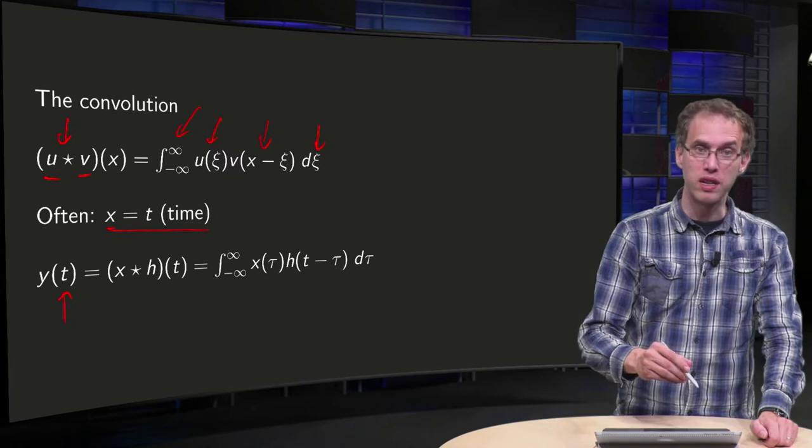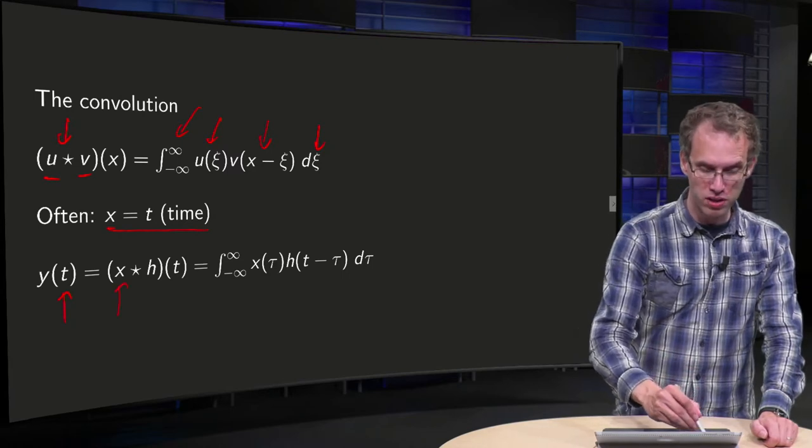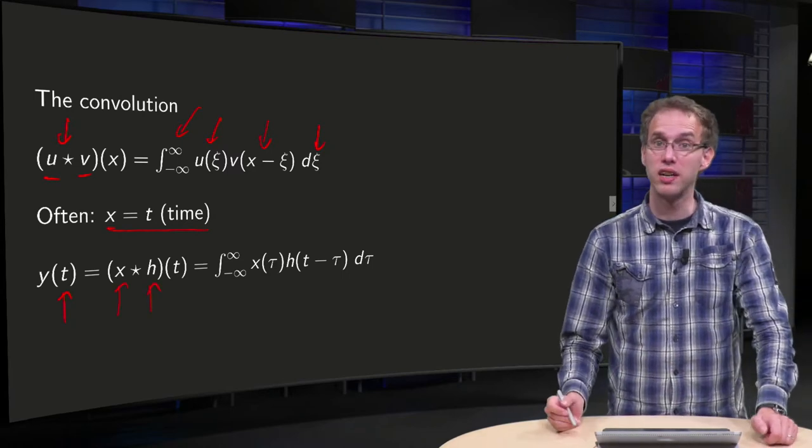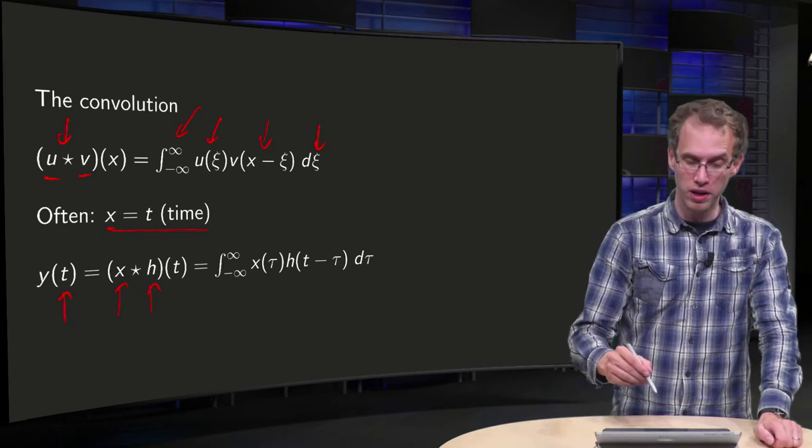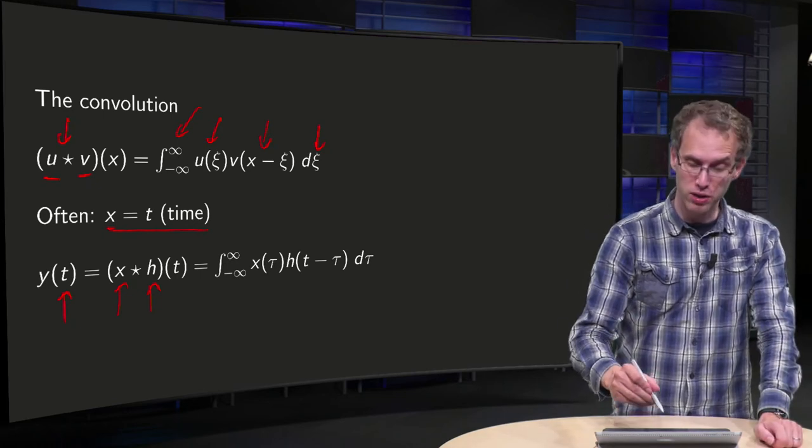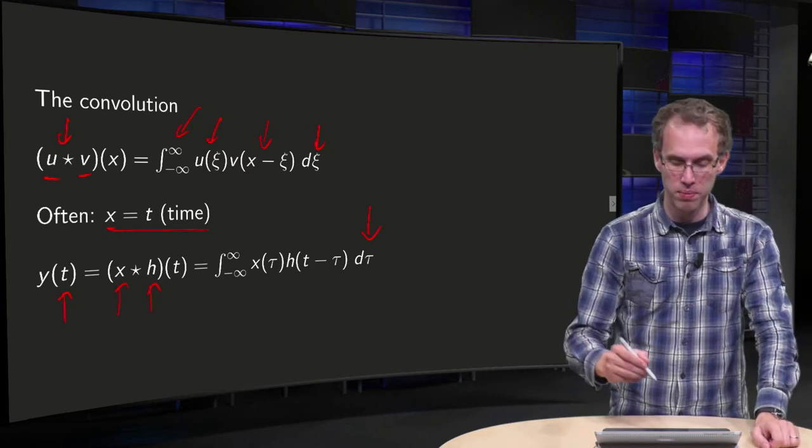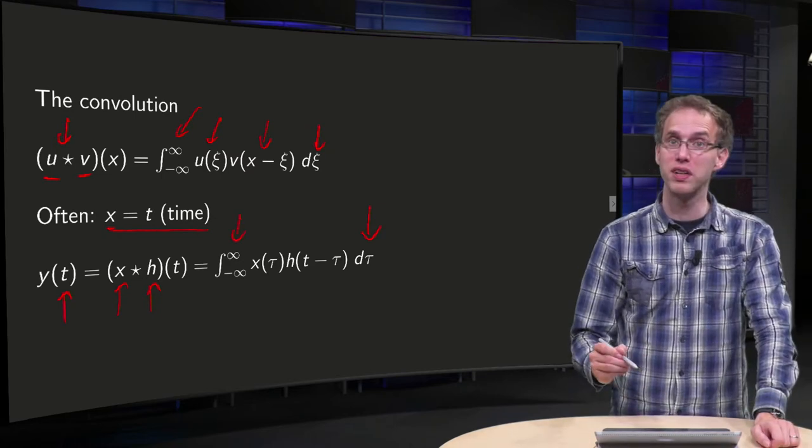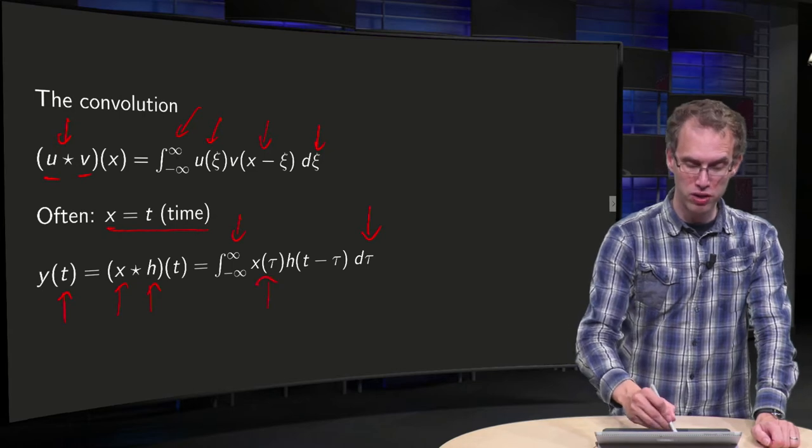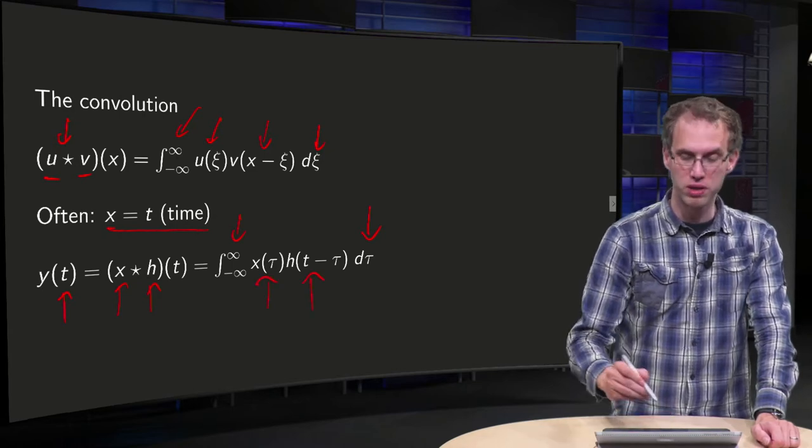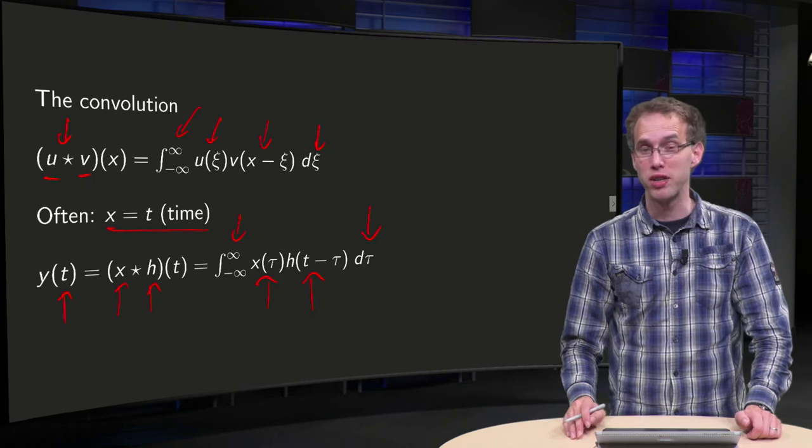And if you compute then the convolution of x star h, you get a function of t, how do you do that? Now we use as a dummy variable often the tau, because we are really thinking of time, integrate from minus infinity to infinity, and you use x of tau and in h you put h of t minus tau.